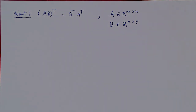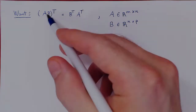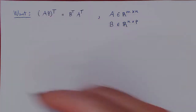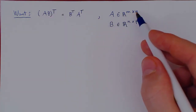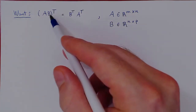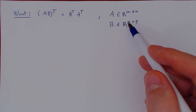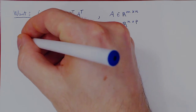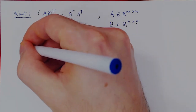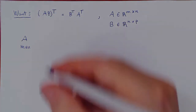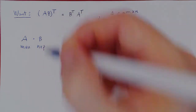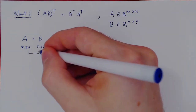So let's prove this. To have an equality of matrices, we have to check that they have the same size. Let's check this first. Assume that A is an M by N, and since AB is defined, B has to be an N by P. So A is M by N times B, which is N by P, so N equals N.